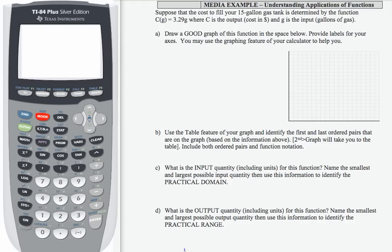Here we're given a situation with a 15 gallon gas tank and the cost to fill that tank at C = 3.29G where C is the output and G is the input. So input is in gallons of gas, the output C is in dollars. So our first task is to draw a good graph of the function using the grid here.